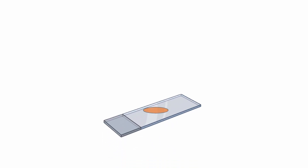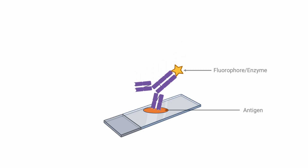The primary antibody, which is already conjugated to a fluorophore, depicted by the star, is applied to the sample. This primary antibody is specific to the antigen of interest in the sample.